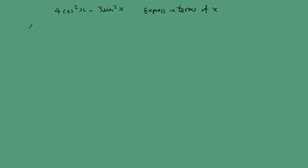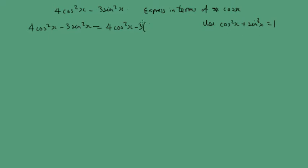So the first thing we're going to do is rewrite it. We want to get rid of the sine squared, so we're going to use cosine squared x plus sine squared x equals 1 to replace the sine squared x. So we have 4 cosine squared x minus 3 times (1 minus cosine squared x). Expanding the brackets gives minus 3 plus 3 cosine squared x. Gathering our terms: 4 add 3 is 7, so that gives us 7 cosine squared x minus 3.